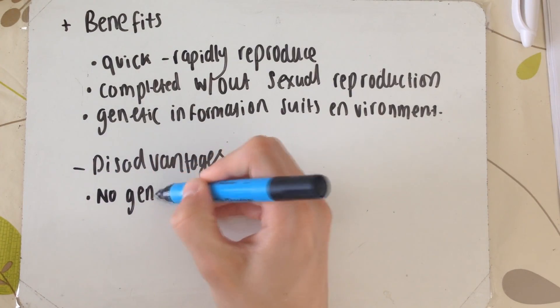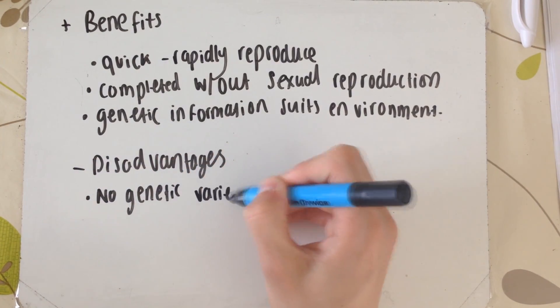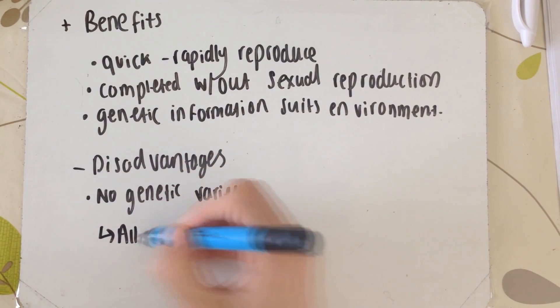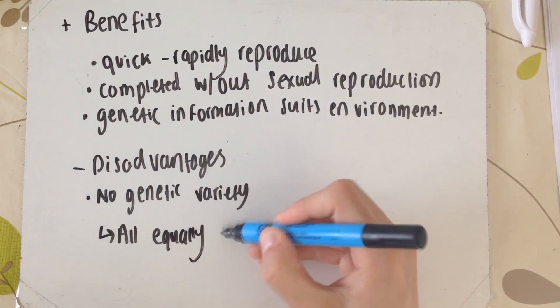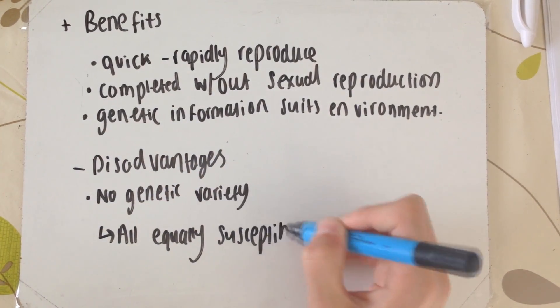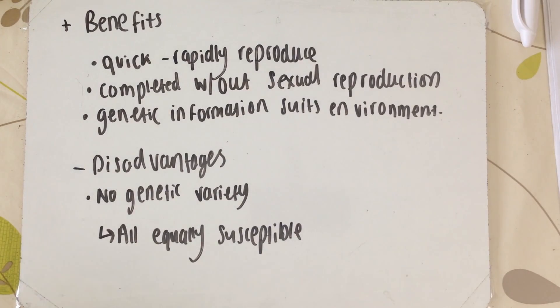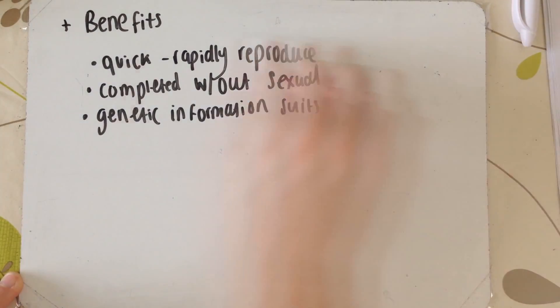The only real disadvantage is there's no genetic variety between a parent and offspring. If they're all exactly the same and the parent is susceptible to a changing environment — it could be a disease — that means all the offspring are also going to be equally susceptible.